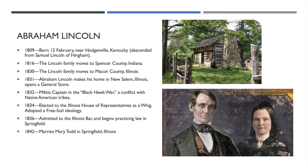Lincoln was born on the 12th of February near Hodgenville, Kentucky. He's actually descended from a man named Samuel Lincoln, who was from Hingham, England and one of the very earliest settlers of Hingham, Massachusetts. In 1816, the Lincoln family moved from Kentucky to Spencer County, Indiana. Then in 1830 they moved on further to Macon County, Illinois, where Abraham Lincoln was almost 22 years old. He departed from his family to make his own home in New Salem, Illinois, where he was also a partner in a general store.